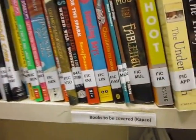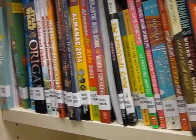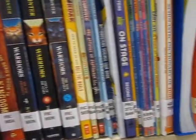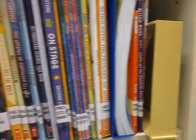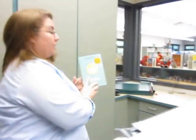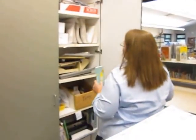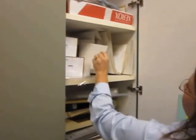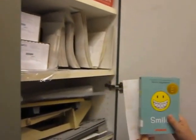Mrs. Klein has it in order from left to right as level of importance of what she would like to have covered first. So we're going to start on the left side and we're going to choose our book. We're going to come to the closet and select the correct size of the Capco cover that will fit the book.